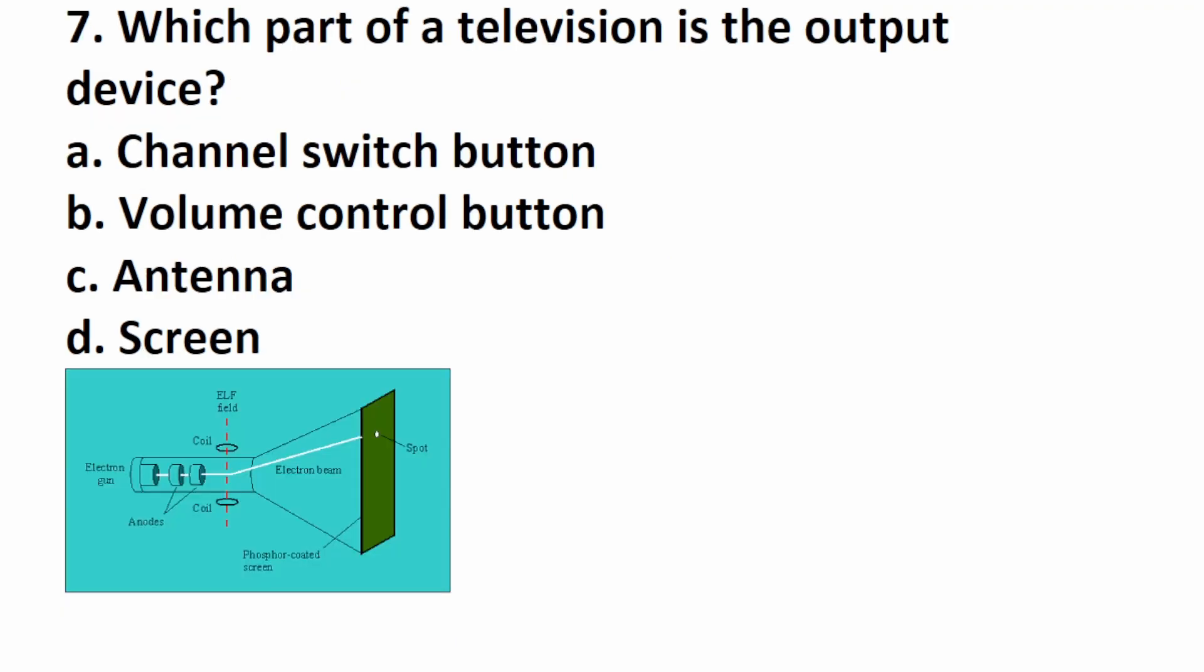Number seven says, which part of a television is the output device? Here's an example of an old CRT TV. At the back of the TV, there's an electron gun that shoots electrons at the screen. And the screen outputs what we see as an image. So this one is going to be D, screen.